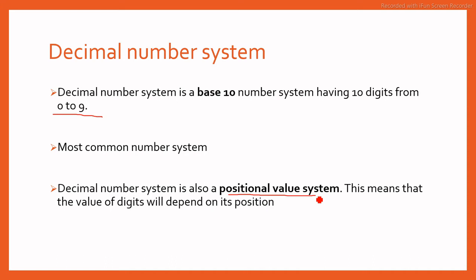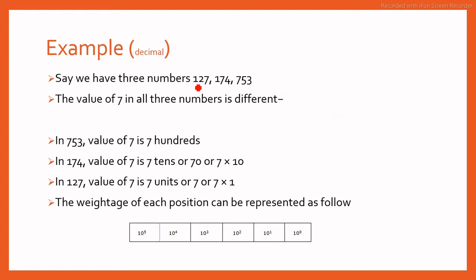Decimal number system is a positional value system which means that the value of every position changes. For example, here we have three numbers: 127, 174, and 753. In these three digits, 7 is common, but due to different position of digit 7, its value is different. For example, in 753, the value of 7 is 700. Similarly, if you see in 174, its value is 70. In 127, the value of 7 is only 7.